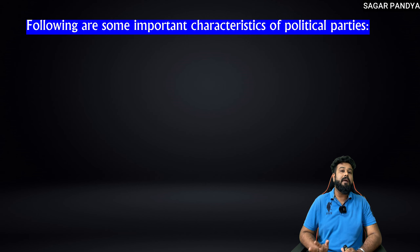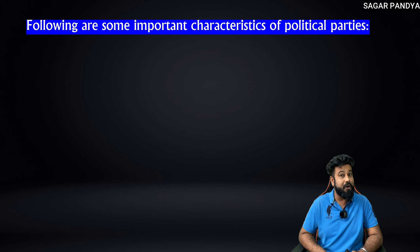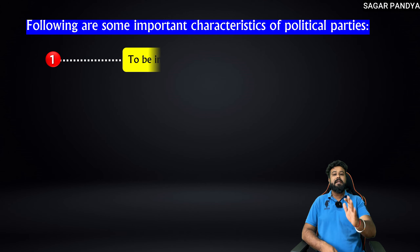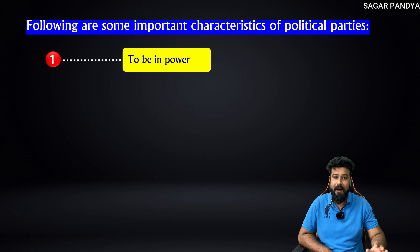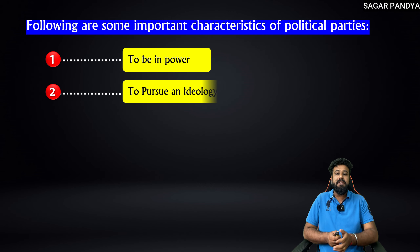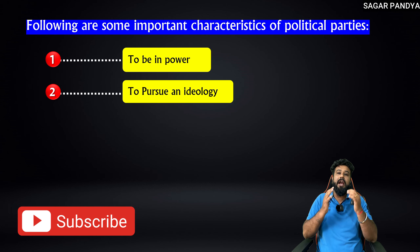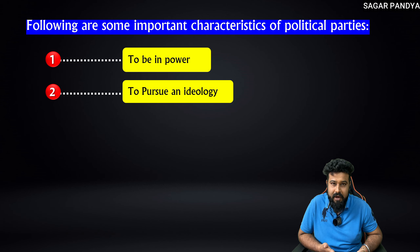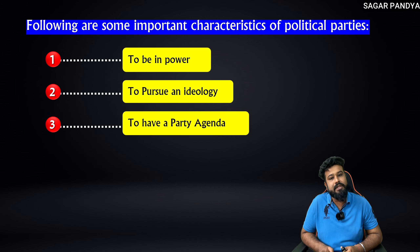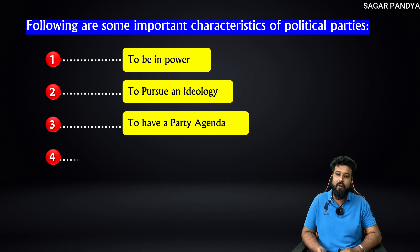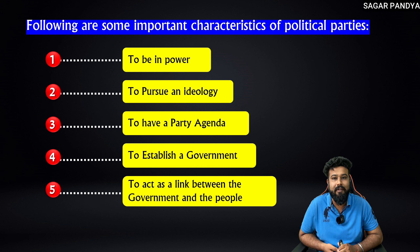Following are some of the important characteristics of a political party — this is an important two-mark exam answer. The first important characteristic is to be in power. The second is to pursue an ideology. The third characteristic is to have a party agenda. The fourth is to establish a government. And the fifth is to act as a link between government and people.